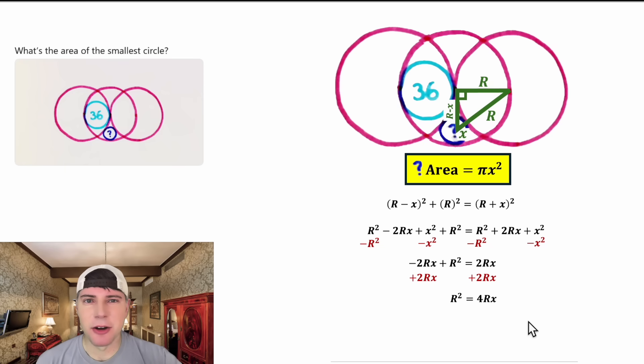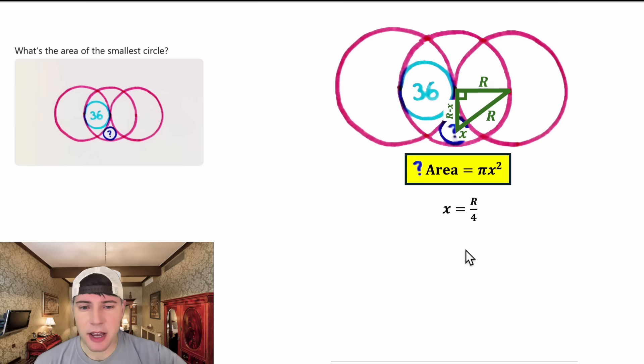Next, to get the x all by itself, let's divide both sides by 4 big R. Normally, you don't want to divide by a variable, but we can safely do it here because we know for sure big R does not equal zero. The left-hand side simplifies to R over 4, and on the right-hand side, we're left with x. Now we've solved for x. x is equal to big R over 4. This looks important. Let's put a box around it.